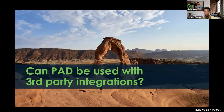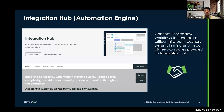A common question we get asked often is: can PAD be used with third-party integrations? The answer is yes. Currently, we provide you with some activities that you can download from the Service.Store that provide actions for third-party integration. In addition, you can also leverage Integration Hub, which is available with the Automation Engine Application Suite. Integration Hub gives you the ability to automate or create integrations with external systems using Flow Designer.